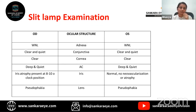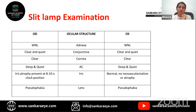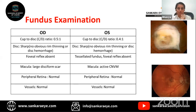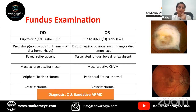Anterior segment evaluation was normal except for iris atrophy in the right eye at the 8–10 o'clock position; the lens was pseudophakic in both eyes. Fundus examination: cup-disc ratio was normal in both eyes. In the right eye, foveal reflex was absent and the macula showed a large disciform scar. The left eye showed tessellated fundus with active CNVM and no foveal reflex. Peripheral retina and vessels were normal. The patient was diagnosed with bilateral exudative ARMD.